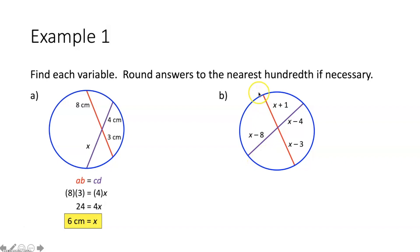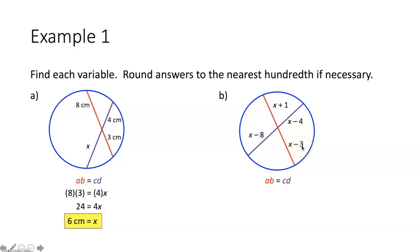Part B, doing the same thing. We have two chords that intersect inside of a circle, separating each other into two separate chord segments. The segments of chords theorem says that the lengths of these two chord segments multiply together to equal the lengths of the other two chord segments. So all I have to do is take X plus 1, multiply it to X minus 3, and set that equal to X minus 8 times X minus 4.